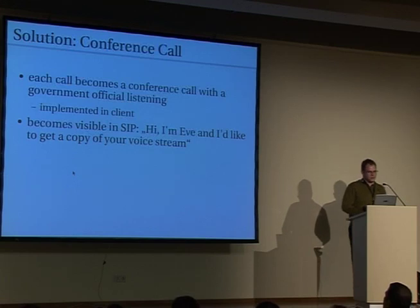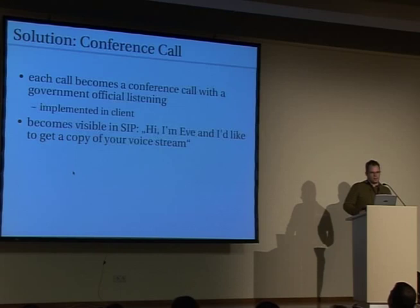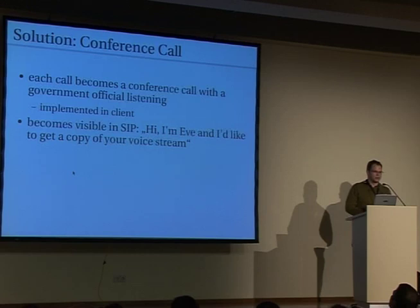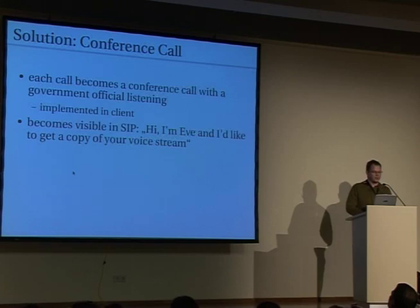The first attempt to get SIP data and RTP — voice and signaling — was: if you're getting intercepted, just build some sort of conference call and make a phone at the law enforcement agency ring. They just get a copy of your signaling and voice data. But it has to be implemented in the client and nobody would do that, since in SIP and in just doing a TCP dump you would see somebody is getting a copy of your data. And you might not have the bandwidth to actually do that. So there's no way to do that.